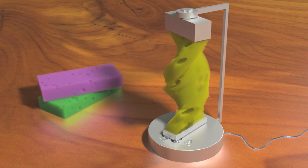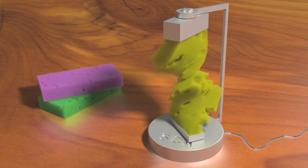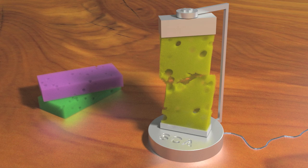We twist a sponge by enforcing Dirichlet boundary conditions on the ends. Our method naturally handles fracture and self-collisions.